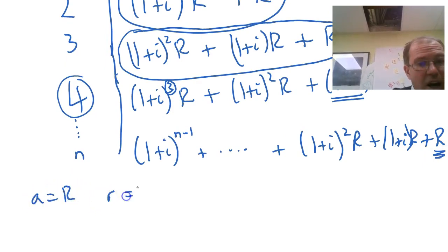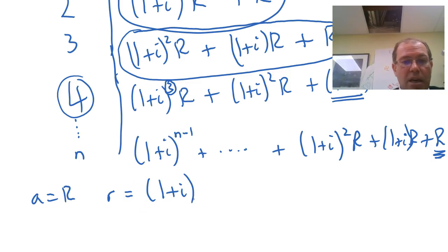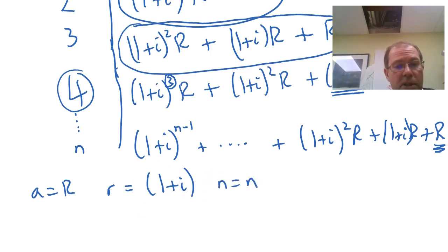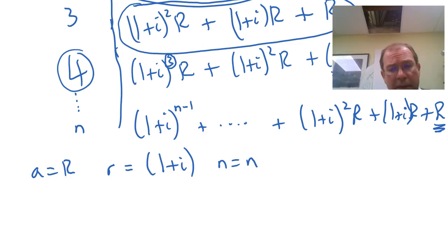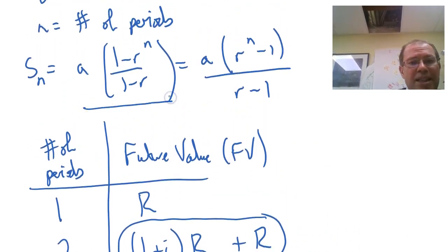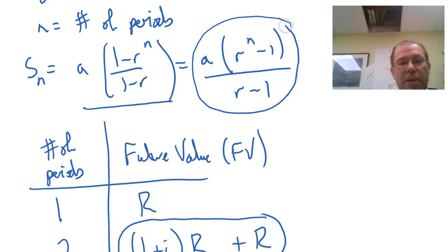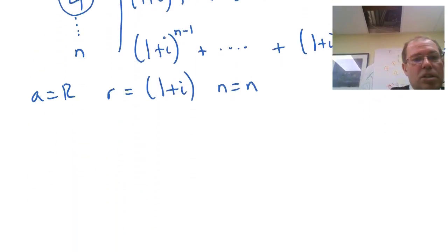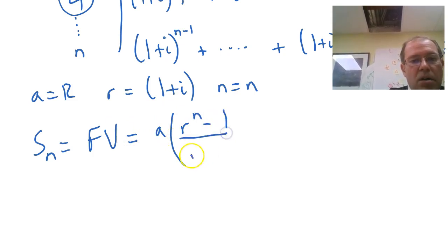So now let's put it into the sum of the first N terms. Well, I have two formulas to choose from. This one's slightly better, because when I put R is 1 plus i in it, 1 plus i minus 1 makes i, so the 1 minus 1 cancels, whereas 1 minus R would make minus i. So I'm actually going to use the second formula there. So the sum to the first N terms, which is my future value, is going to be A, R to the N minus 1 over R minus 1.